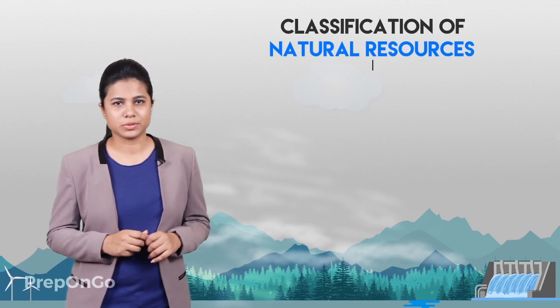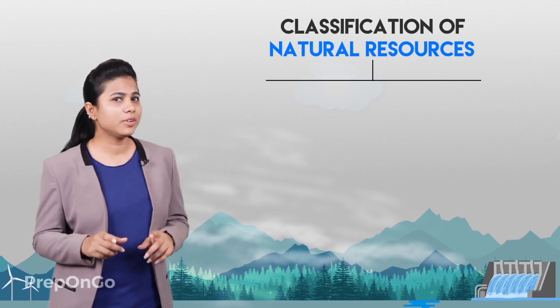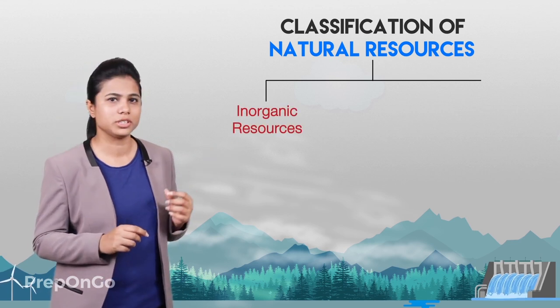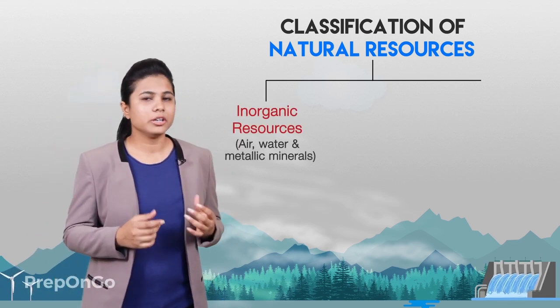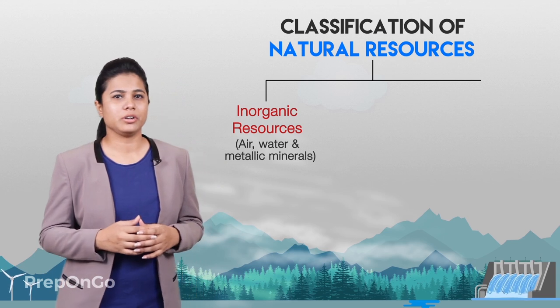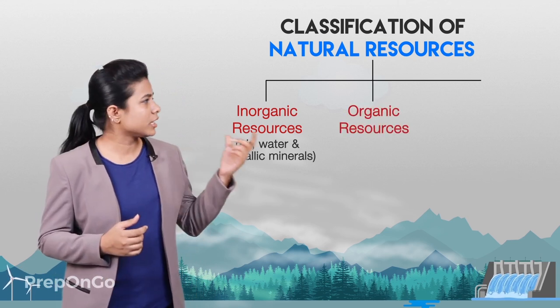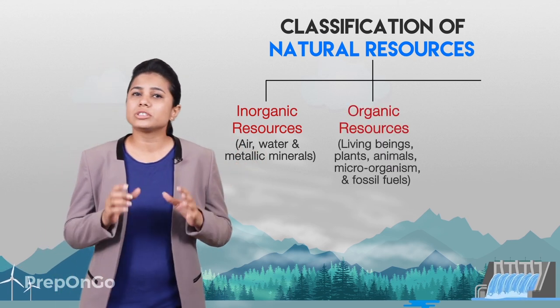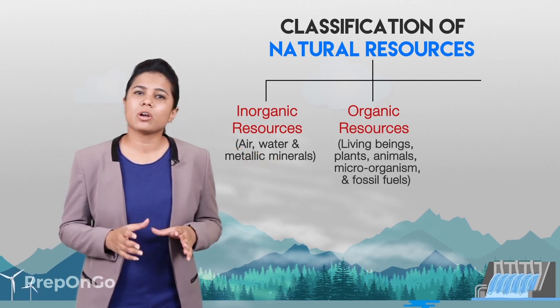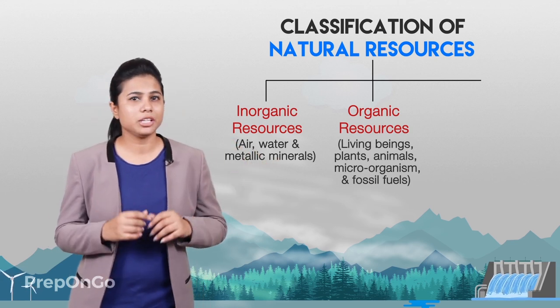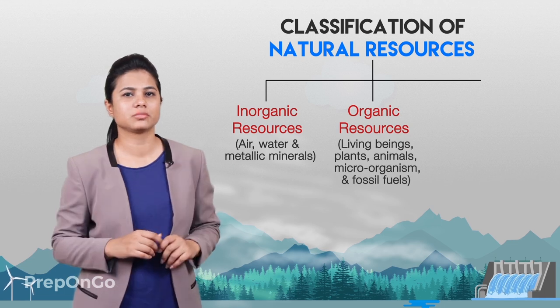For better management and study, we can classify natural resources into three types. The first is inorganic resources, which include air, water, and metallic minerals. The second is organic resources, which include living beings, plants, animals, microorganisms, and their products including fossil fuels.